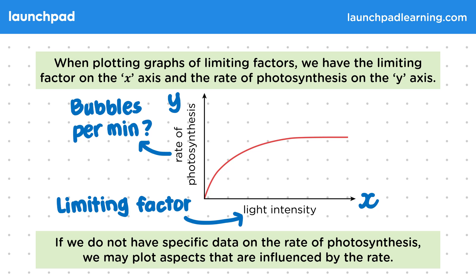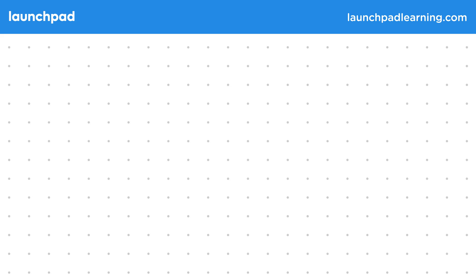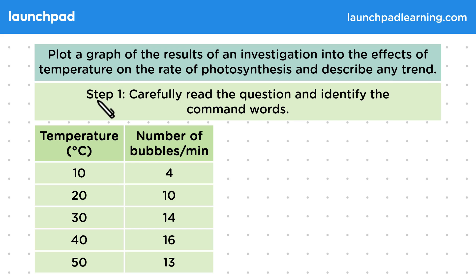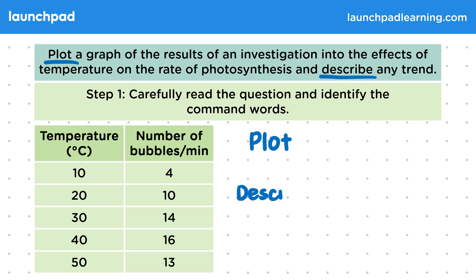Plot a graph of the results of an investigation into the effects of temperature on the rate of photosynthesis and describe any trend. Step one: carefully read the question and identify the command words. This question uses the command words 'plot', asking you to plot a graph, and 'describe', asking you to say what you see.